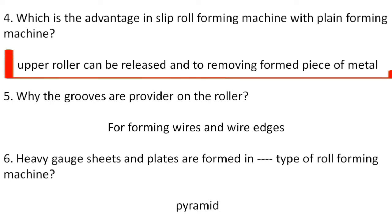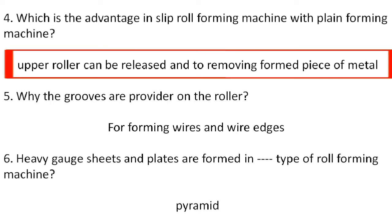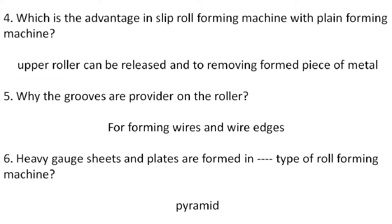The advantage of the slip roll forming machine over the plain forming machine is that the upper roller can be released to remove the formed piece of metal — this is called releasing the upper roller.